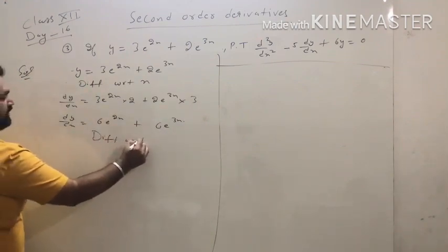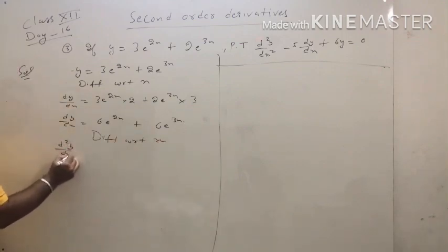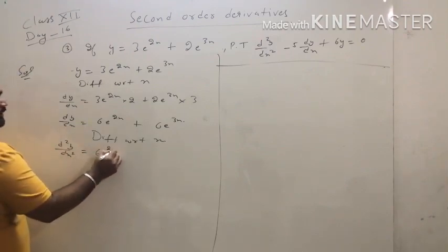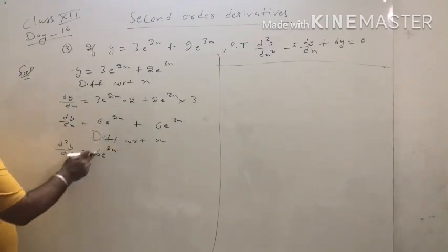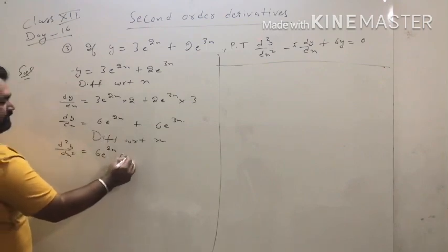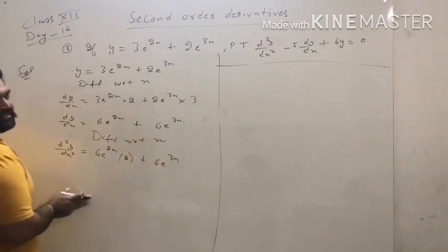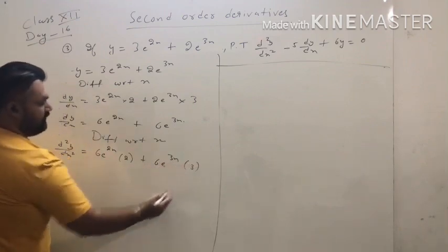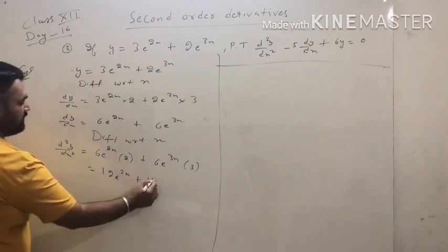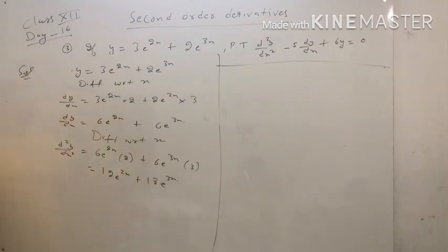Again differentiate with respect to x. d²y/dx²: derivative of 6e^(2x) gives 6 · e^(2x) · 2 = 12e^(2x); derivative of 6e^(3x) gives 6 · e^(3x) · 3 = 18e^(3x). So d²y/dx² = 12e^(2x) + 18e^(3x).